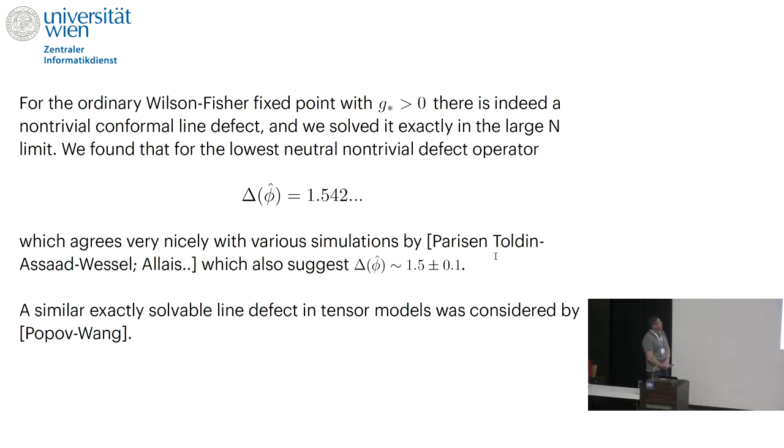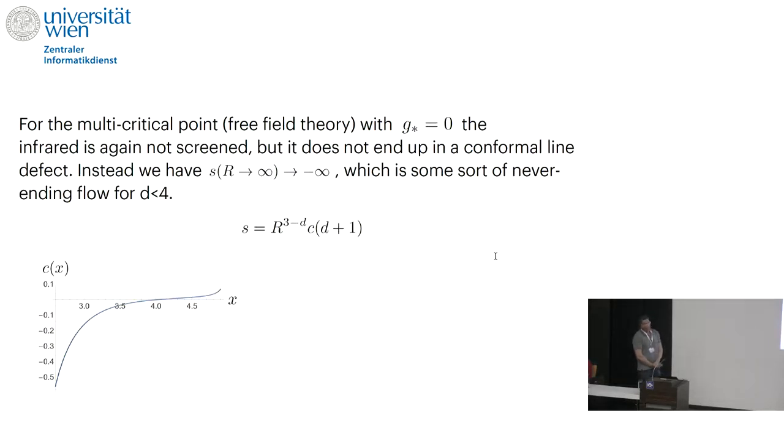Indeed, one paper that we published was to try to compute some exact properties of the line defect that you get for the ordinary Wilson-Fisher fixed point, where G star is non-zero. This is an exact result in the large N limit. There has been lots of simulations of it recently and also a little bit before, and it seems roughly compatible. So it seems that QFT tools indeed for this particular line defect get the answer pretty close to experiment. And you can generalize this construction to many other models. This is just for the symmetric O(N) model.